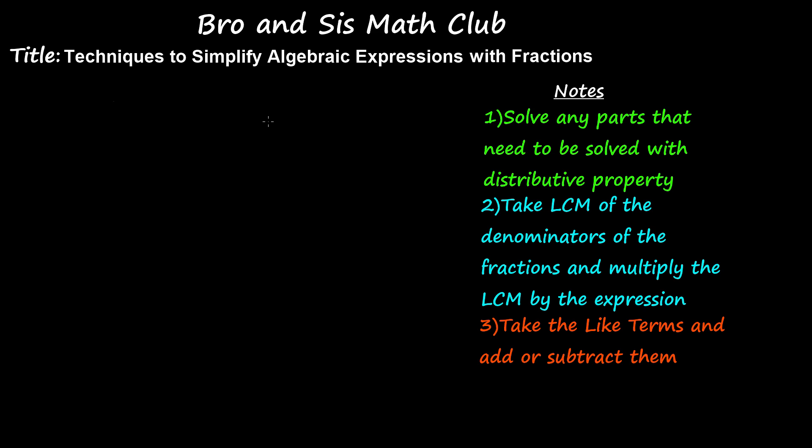To solve an algebraic expression with fractions, the first step is to solve any parts that need to be solved with distributive property. Once that's done, then take the LCM of the denominators of the fractions, if you have any, and then multiply the LCM by the whole expression. Finally, we'll take the like terms and add or subtract them, and then you will get a simplified form of your algebraic expression. Let's start.